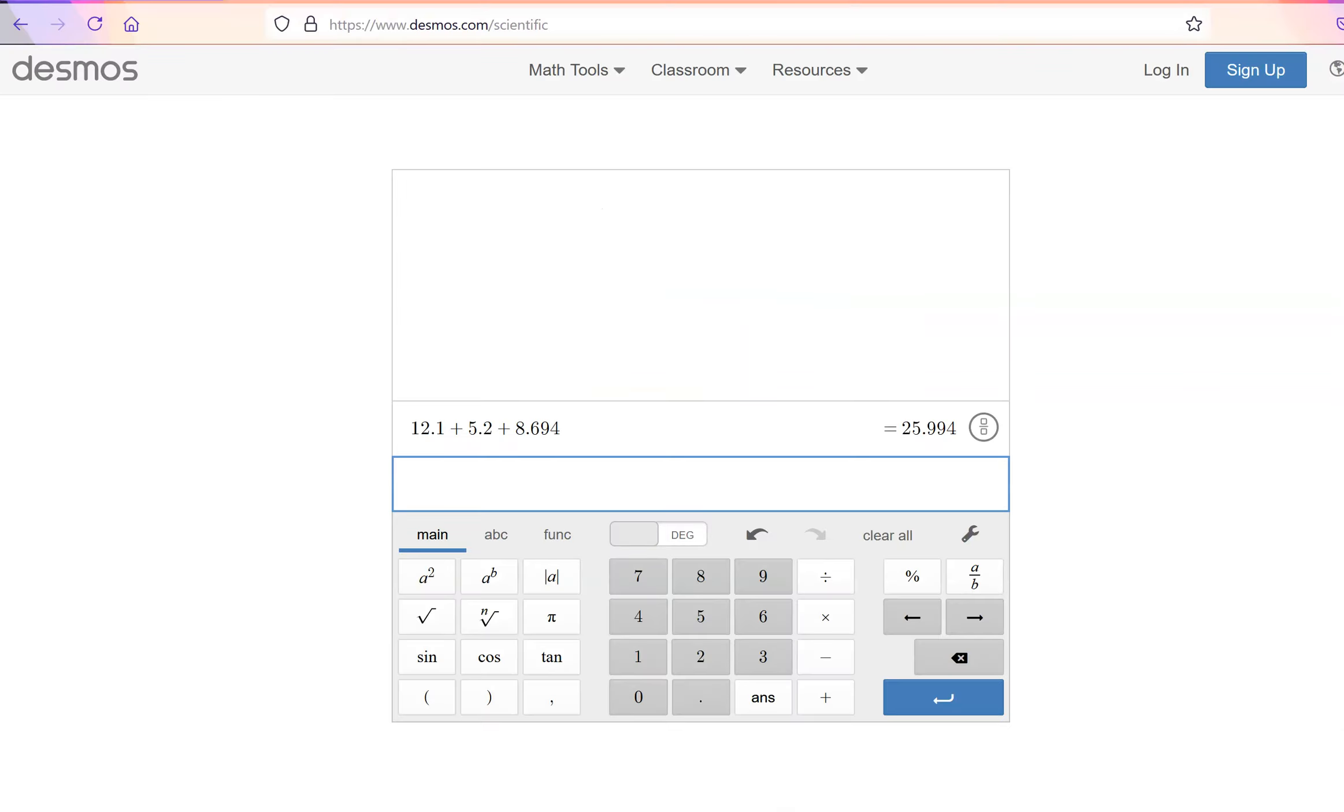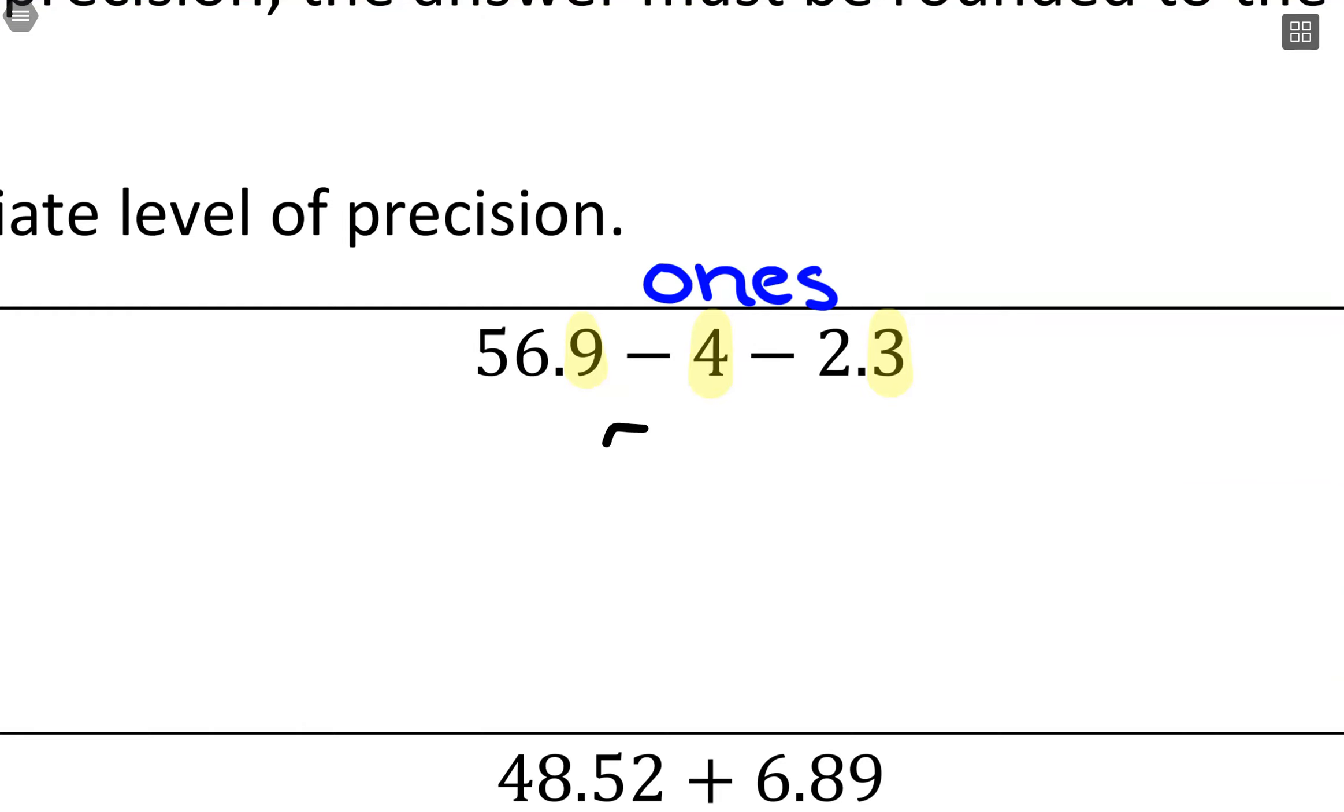We'll go to our calculator and do 56.9 minus 4 minus 2.3. I'm just going to write that whole number down, 50.6. We want to round to the ones place, so there's our rounding digit. To test, we're going to look at six, which is large, so that tells me to round up. This is going to be 51, and no decimal or zero following after in terms of precision. This is exactly right.